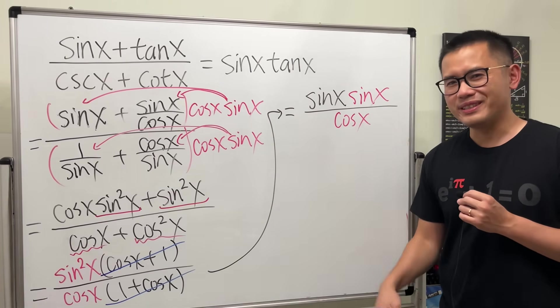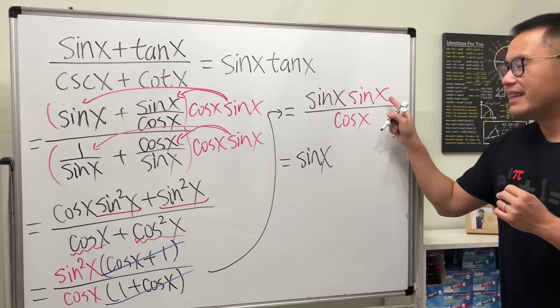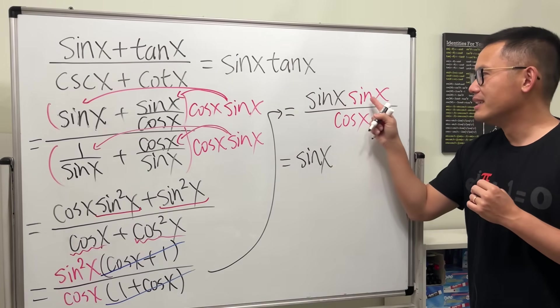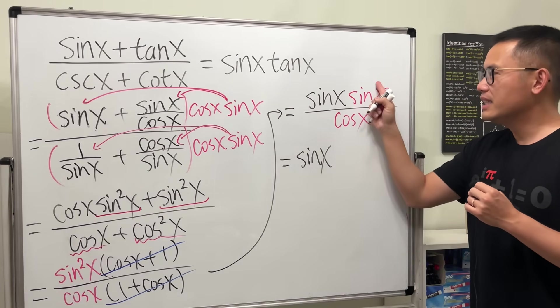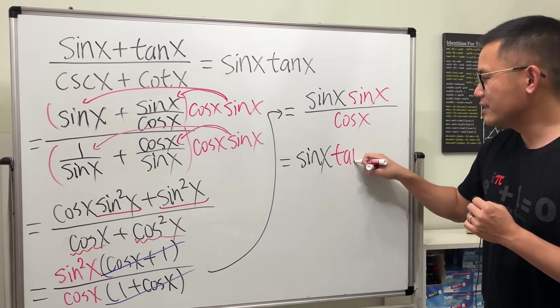Why did I do this? Well, you can see we have sine x here, and then sine x over cosine x. If you pair this up, this equals tangent x.